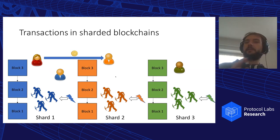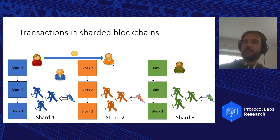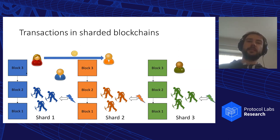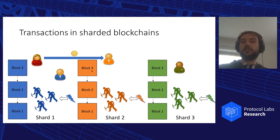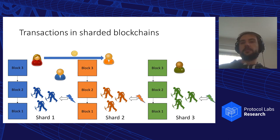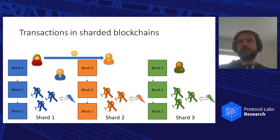However, when Alice wants to send something to Charlie who is in a different shard, it's more complicated. We need one transaction in shard one to decrease Alice's balance, another one in shard two to increase Charlie's balance, and some synchronization between the two shards to make sure everything is atomic.